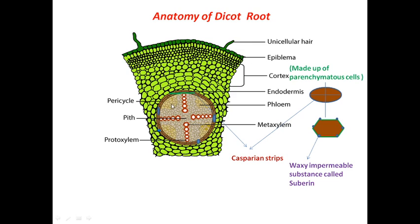Next we have the vascular bundles — xylem and phloem. Here in light orange we have phloem bundles, and in red we have xylem bundles. The arrangement of xylem and phloem is radial, meaning xylem and phloem don't exist on the same radius — they are on different radii, alternate to one another. This arrangement is called radial.